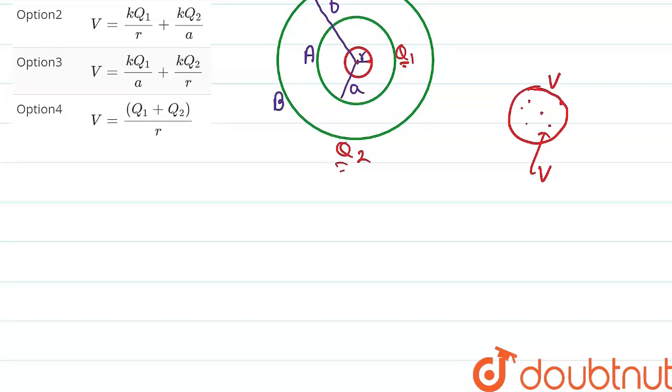Now, from here we know that the potential at the surface of a shell with radius r is kq upon r, where q is the charge and r is the radius.